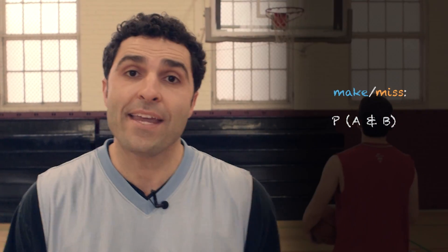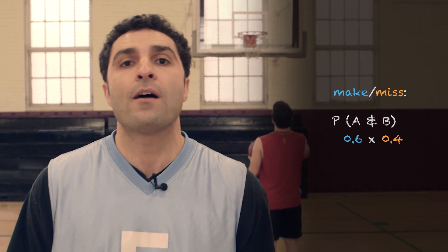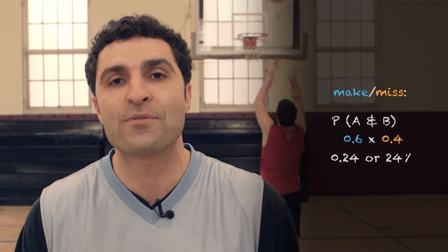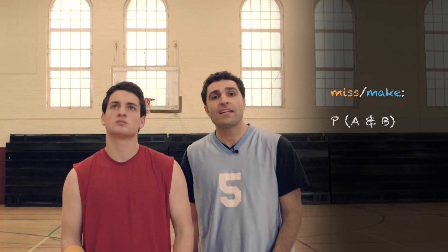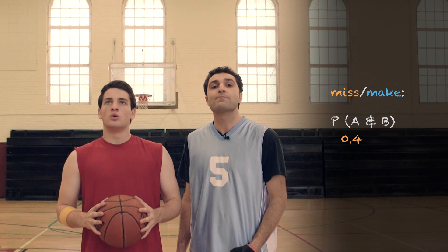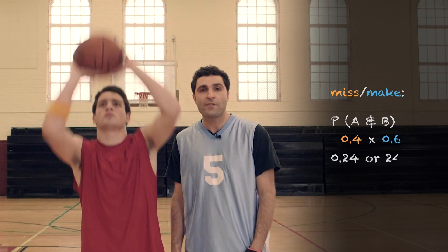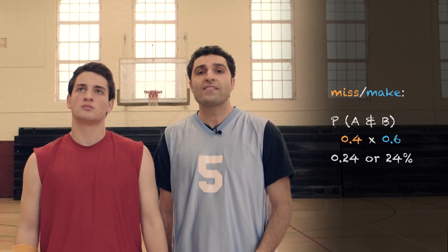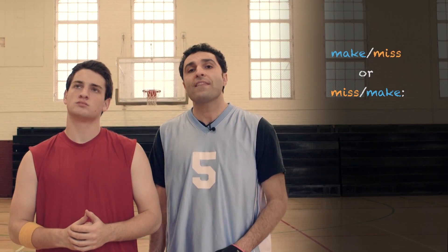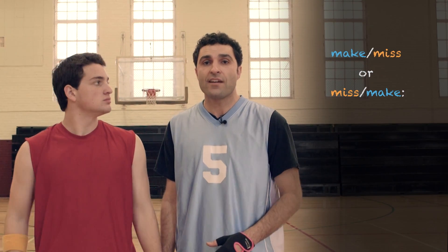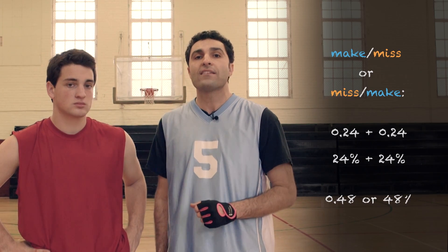The second most optimistic outcome is if Jordan makes one out of his two free throws. This can occur in one of two ways. Make then miss: the probability of making the first shot, 0.6, is multiplied by 0.4, the probability of missing the second, which equals 0.24, or 24%. There's also miss then make: the probability of missing the first, 0.4, multiplied by 0.6, the probability of making the second, for a total of 0.24, or 24%. With both scenarios equaling 24%, we can find the likelihood of either event occurring by adding the two together to get 0.48, or 48%.